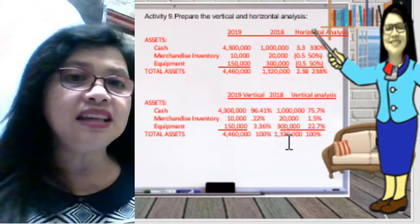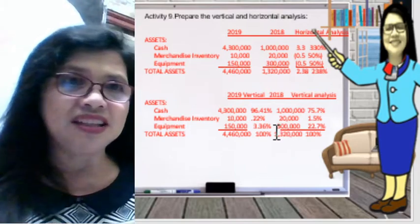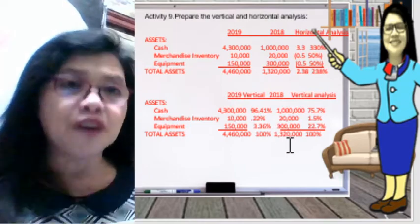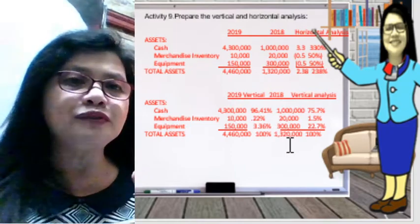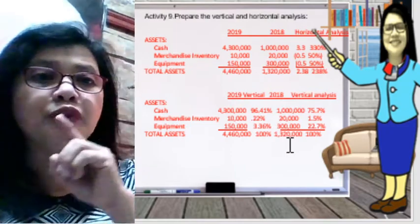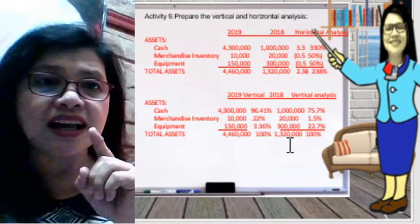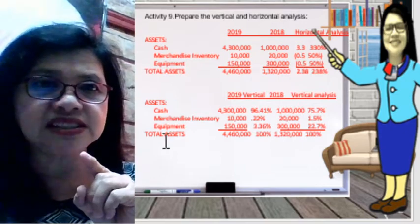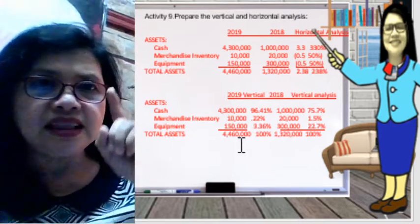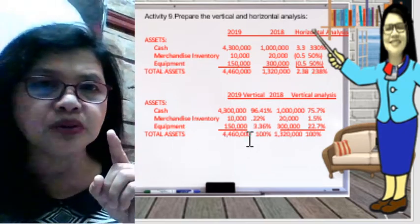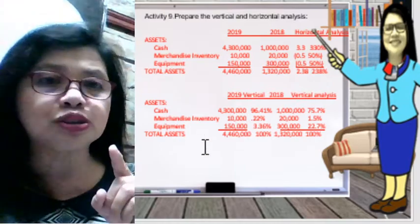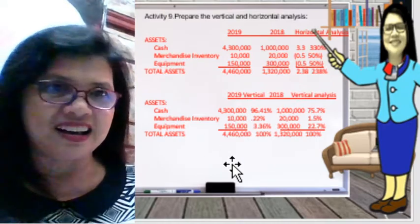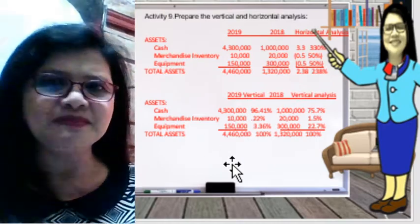In vertical analysis, you need to find the base account. In this case, for the asset section, the total assets is the base account, which represents 100%. Cash is 96.41%, merchandise inventory is 0.22%, and equipment is 3.36% of total assets.